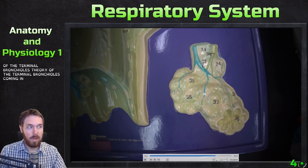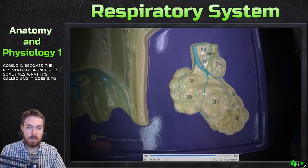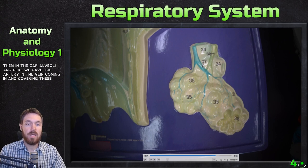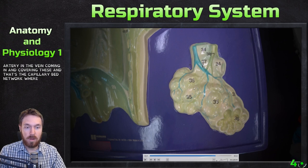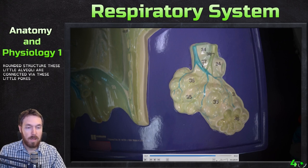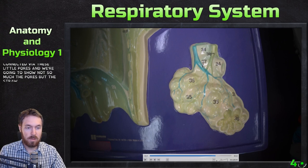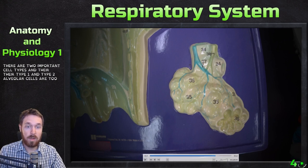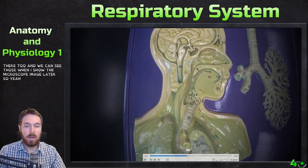The alveoli are the little respiratory exchange units at the base of the terminal bronchioles. We have terminal bronchioles becoming respiratory bronchioles, then going into these little grape-like structures — a single one is called an alveolus and multiple ones are called alveoli. Here the artery and vein come in covering these, forming the capillary bed network where external respiration — gas exchange — takes place. The alveoli are connected via little pores and are made of simple squamous epithelia, only a single cell layer thick. There are two important cell types: type 1 and type 2 alveolar cells, or pneumocytes, and also macrophages.